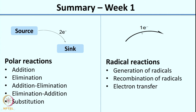The next thing we looked at was radical reactions. In radical reactions the main difference is that you use the single-headed arrow — also called a fish hook arrow — which indicates movement of a single electron. In radical reactions you have generation of radicals, recombination of radicals, and the process of electron transfer.